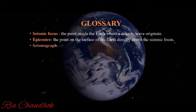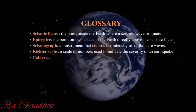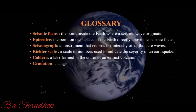Next, seismograph: a seismograph is an instrument that records the intensity of earthquake waves. Richter scale: it is a scale of numbers used to indicate the severity of an earthquake. Next, caldera: a caldera is a lake formed in the crater of an extinct volcano.